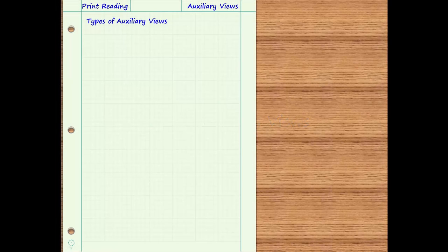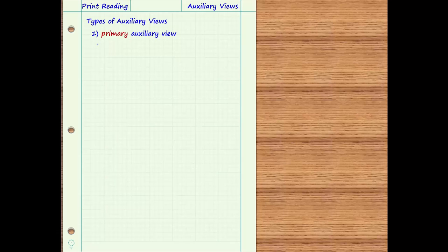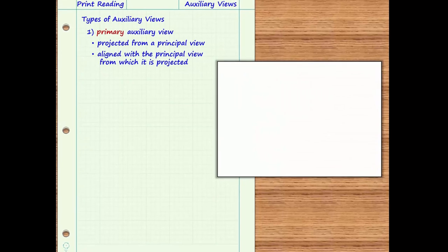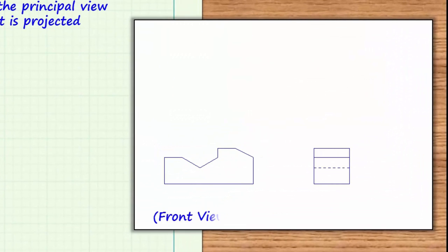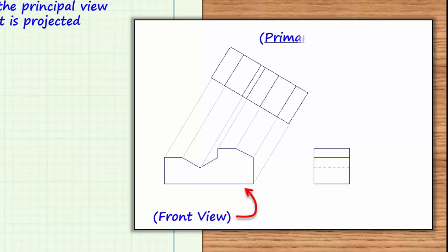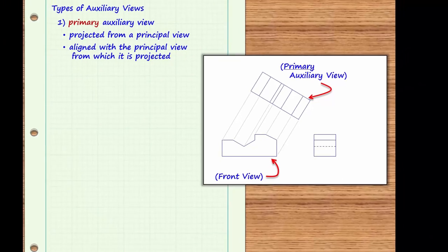Most auxiliary views will be projected from one of the six principal views. These auxiliary views are also aligned with the principal view they are projected from, and are called primary auxiliary views. Here, for example, the auxiliary view has been projected from the front view, and it is drawn aligned with that view, so this auxiliary view is a primary auxiliary view.